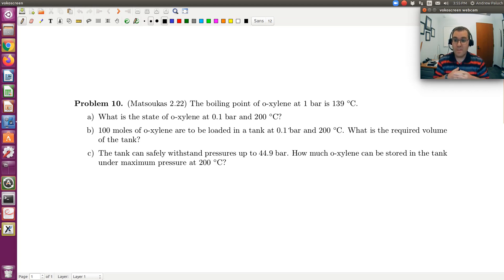B, we have 100 moles of O-xylene that are to be loaded in a tank at 0.1 bars and 200 degrees C. What is the required volume of the tank? So in B, we know that we have 100 moles. Let's take inventory. In B, we're told that we have 100 moles. So N is 100.